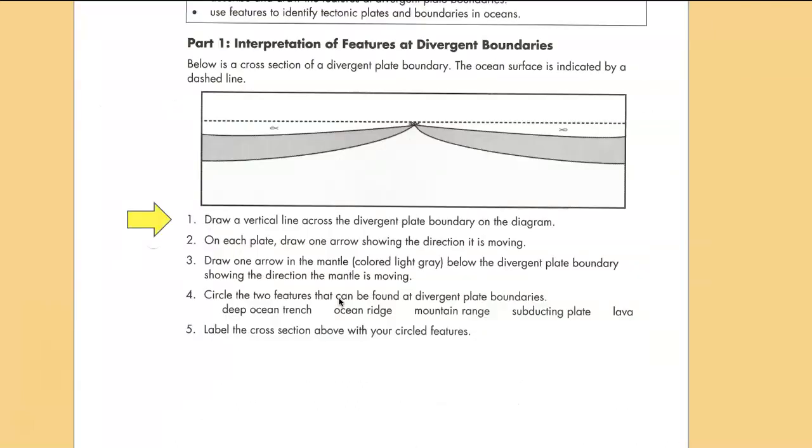Question number one: Draw a vertical line across the divergent plate boundary, and so I've done that in green. On each plate draw arrows showing the direction of the plate movement. Draw an arrow in the mantle showing the direction the mantle is moving, and I've done that with a big red arrow. The mantle is moving up right below where the plates are separating.